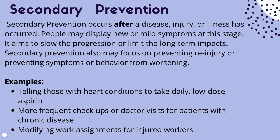Examples of secondary prevention include telling people with heart conditions to take a daily low-dose aspirin — the disease is already present, and doctors recommend aspirin to prevent or limit long-term effects. More frequent checkups for patients with chronic diseases can slow or limit the disease from progressing. Modifying work assignments for injured workers is also secondary prevention — if someone has a broken leg, we make accommodations like allowing elevator use so their injury doesn't get worse.